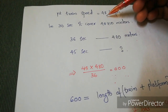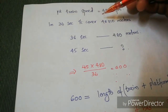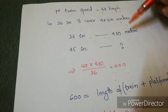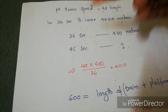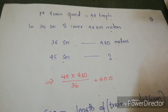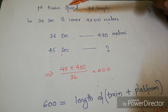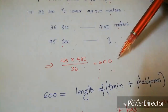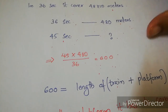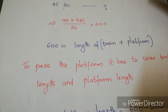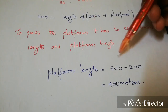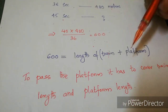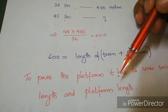The first train's speed is 48 km/h. Using our trick: in 36 seconds it covers 48 × 10 = 480 meters. In 45 seconds (time to cross the platform): 45 × 480 ÷ 36 = 600 meters — this is the combined length of train plus platform. Since train length = 200 meters, platform length = 600 − 200 = 400 meters.